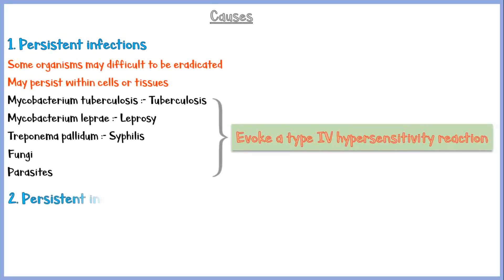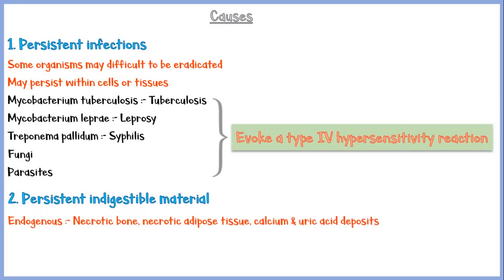Another cause is persistent indigestible material. These may be either endogenous or exogenous. Endogenous ones include necrotic bone and adipose tissue, calcium and uric acid deposits. Exogenous ones include silica, asbestos fibers, and suture material.